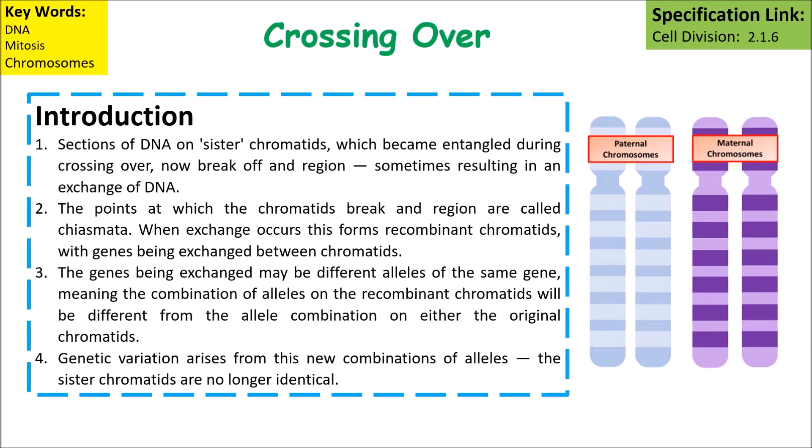The genes being exchanged may be different alleles of the same gene, meaning the combination of alleles on the recombinant chromatids will be different from the allele combination on either of the original chromatids. Genetic variation arises from these new combinations of alleles, so the sister chromatids are no longer identical.